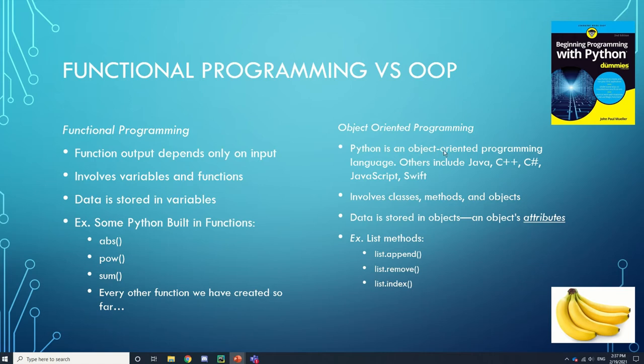I have a little comparison between functional programming and object-oriented programming here, so we can quickly go over this. Basically, when you have functions, you put in a parameter and it returns something or does some action. For every input, there's only one output.